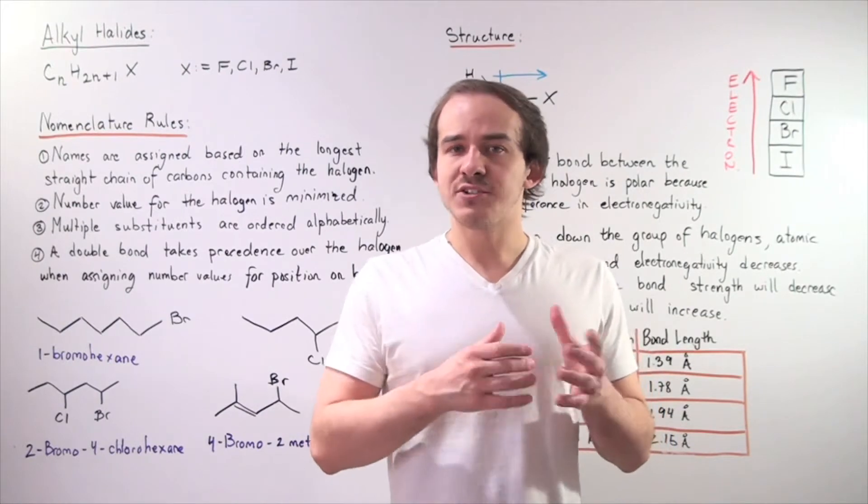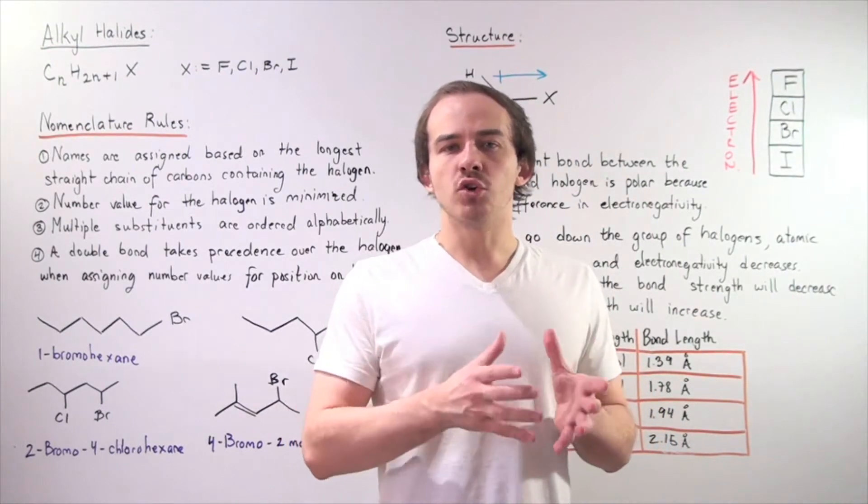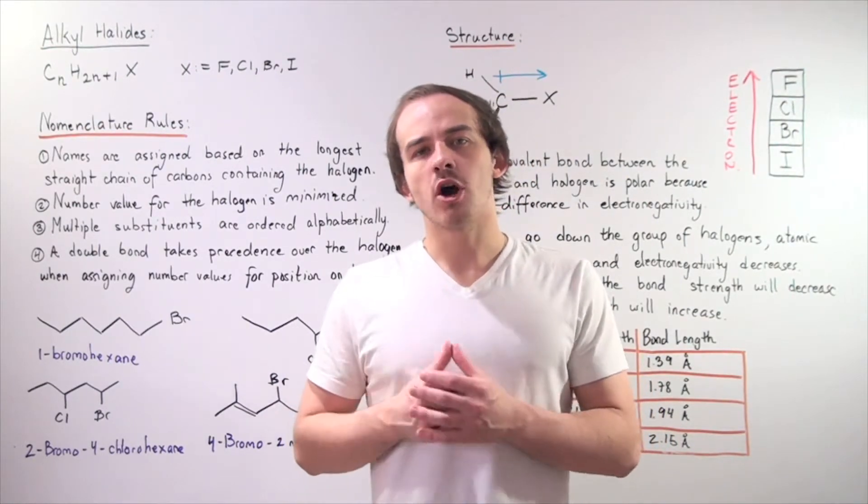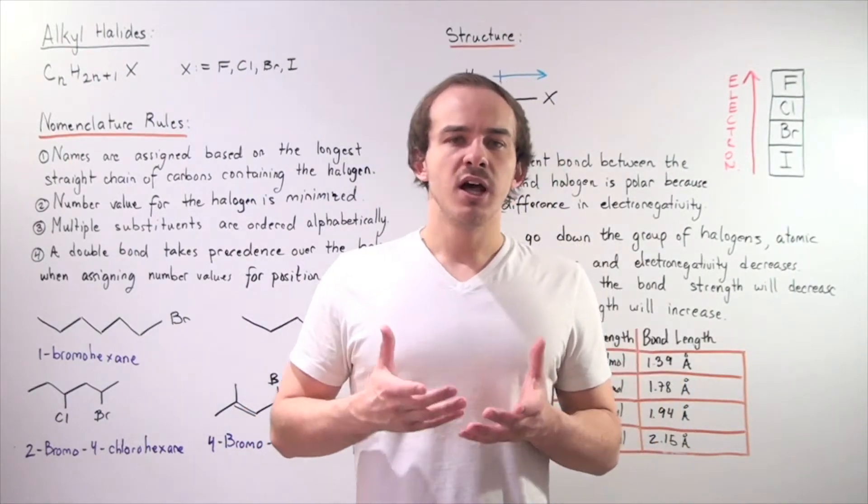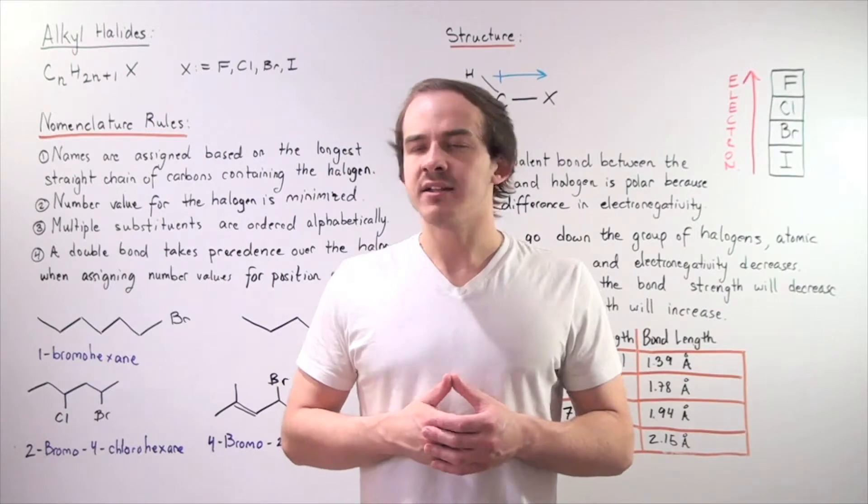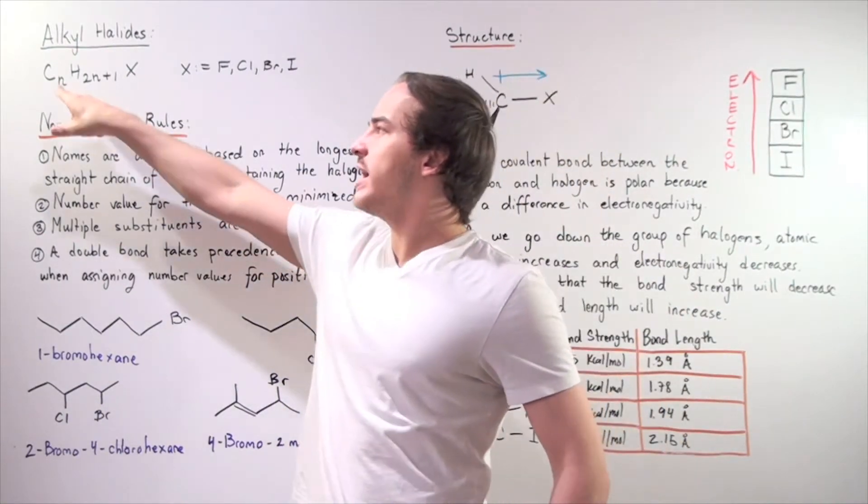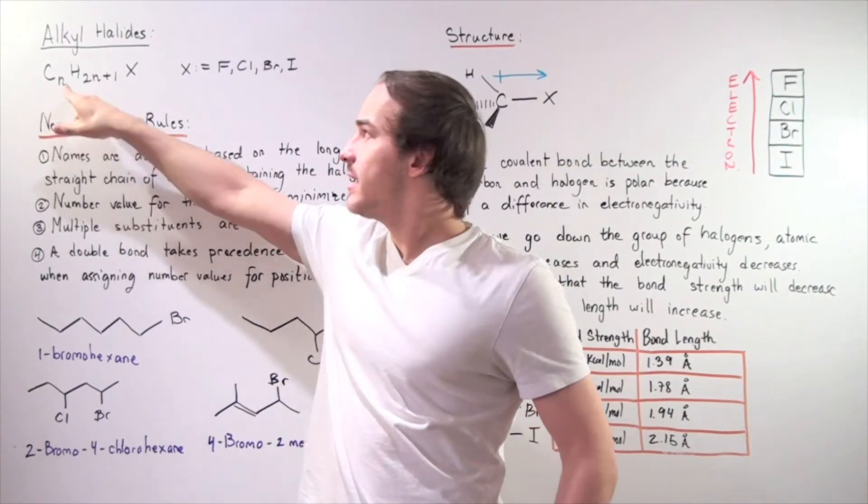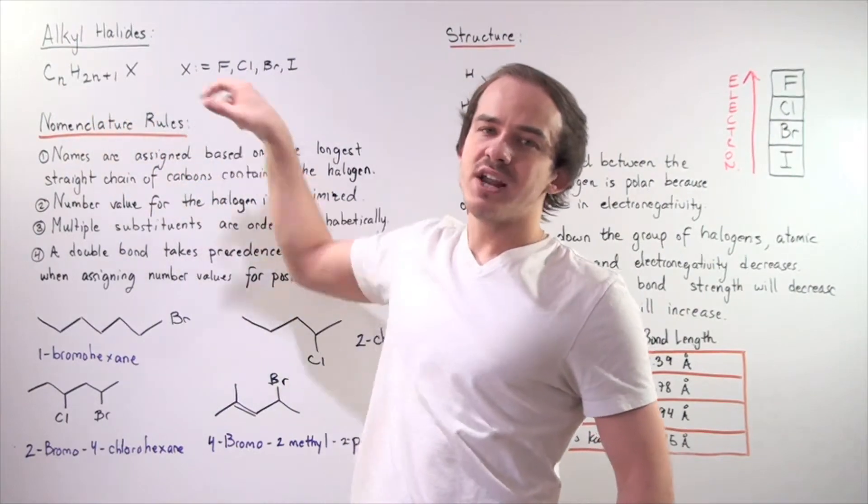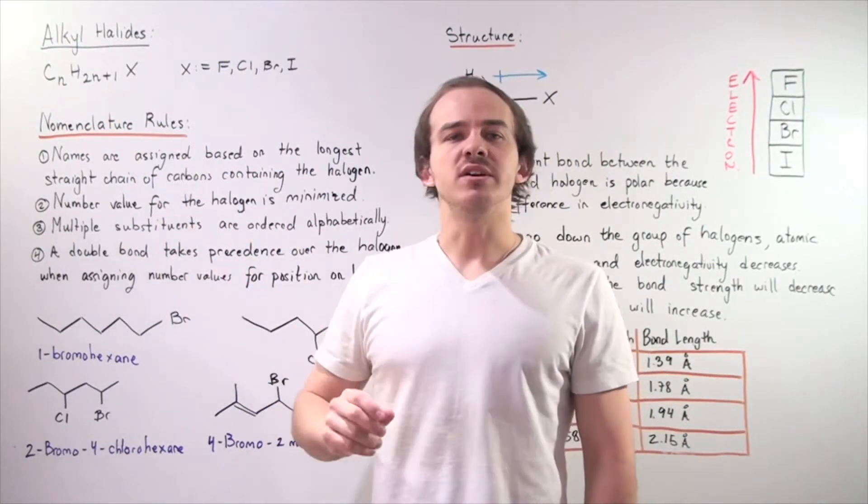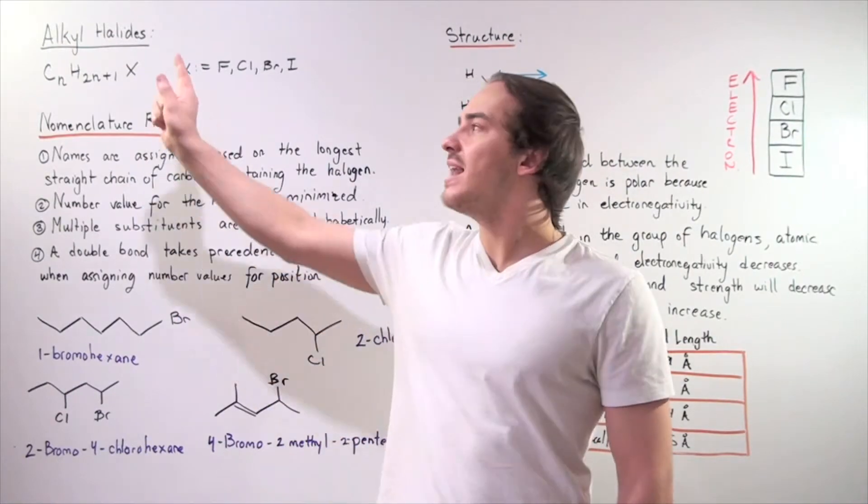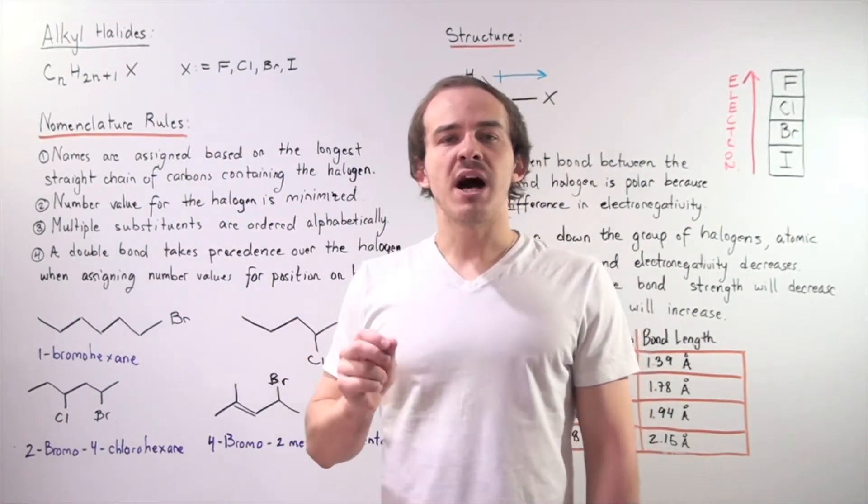Alkyl halides are simply hydrocarbons that have one or more halogens attached to our carbon backbone. Let's begin by looking at the molecular formula for a monosubstitute alkyl halide. Here we have C subscript N, H subscript 2N plus 1X, where N is the number of carbons, 2N plus 1 is the number of H atoms, and X is one of your four possible halogens.